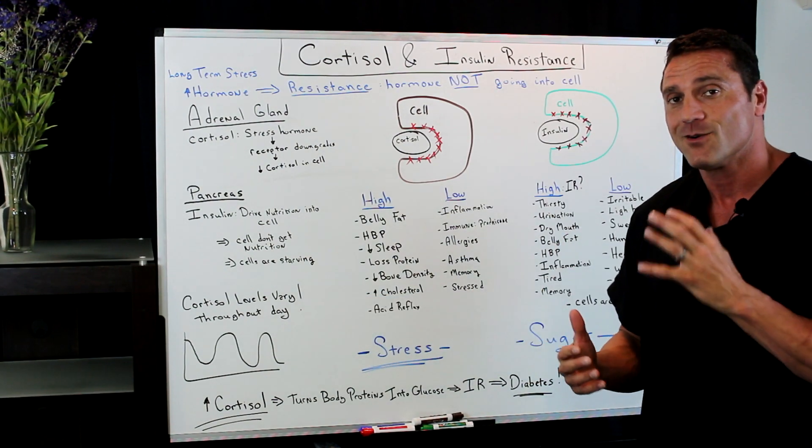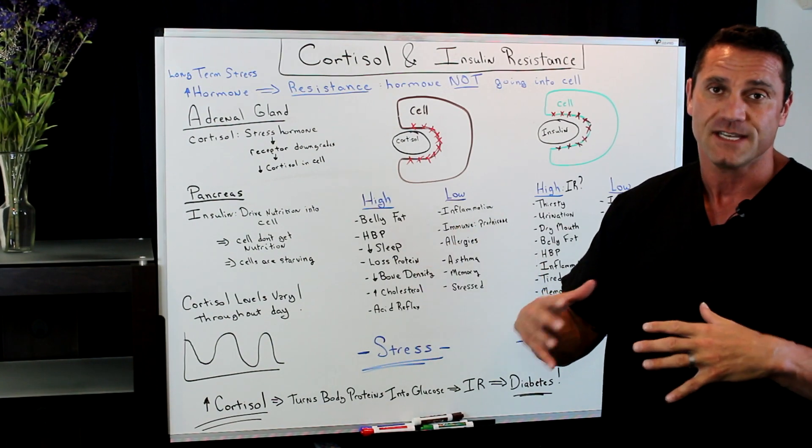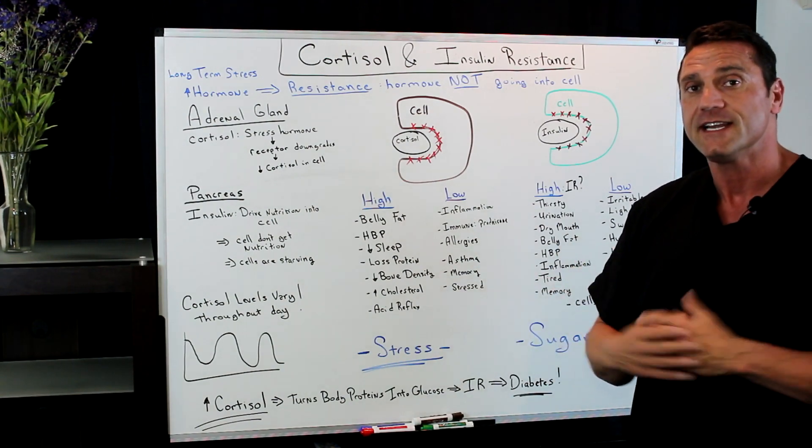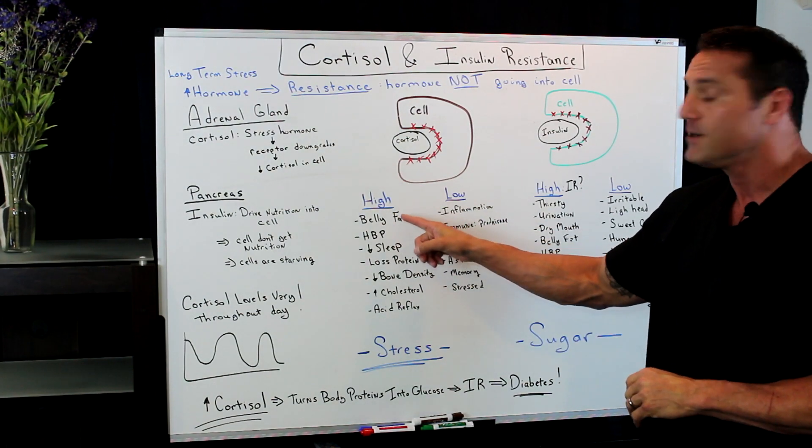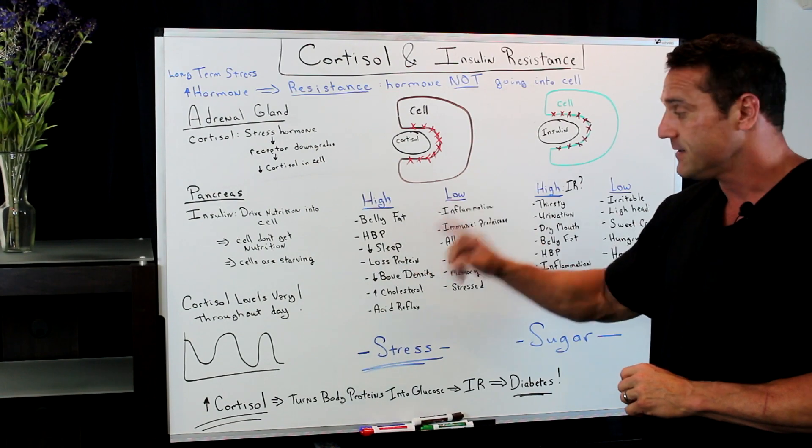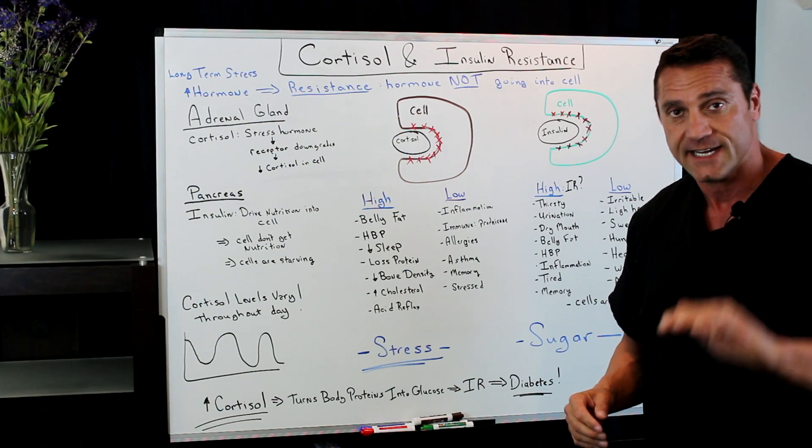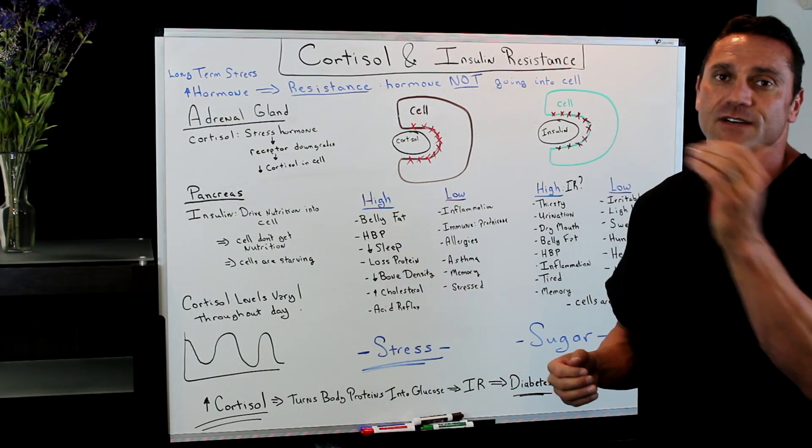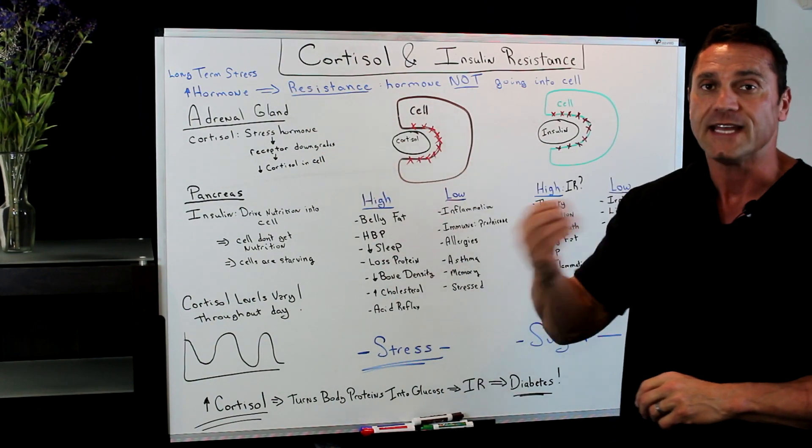The catch-22 about cortisol resistance and the symptoms is that you could have both symptoms. It just varies throughout the day. If you have too much circulating cortisol in the bloodstream, this is where you get deposition of belly fat, very high blood pressure, decreased sleep. At nighttime while you're sleeping, cortisol levels should take a dip. If you have too much cortisol in your body, it's going to interrupt the sleep because cortisol is our stress hormone. It awakens us.